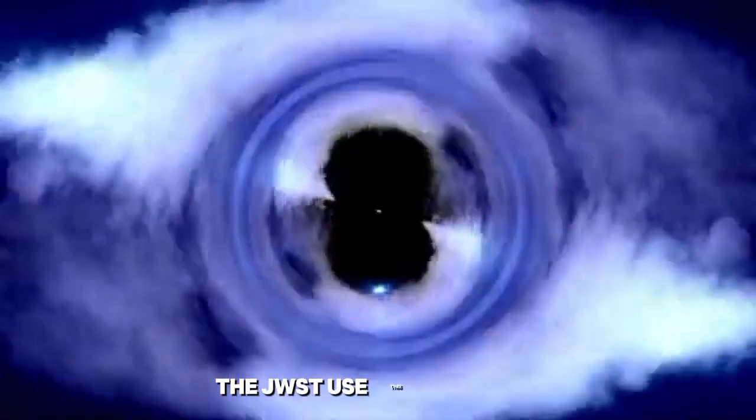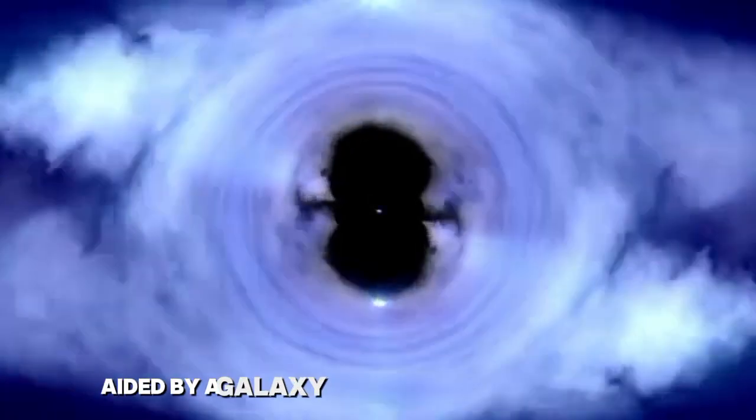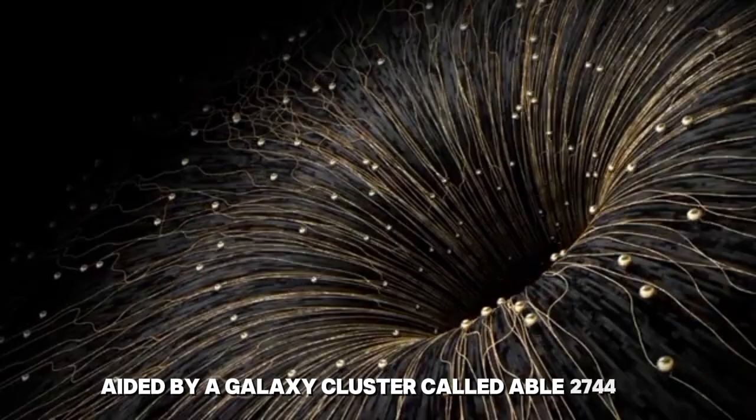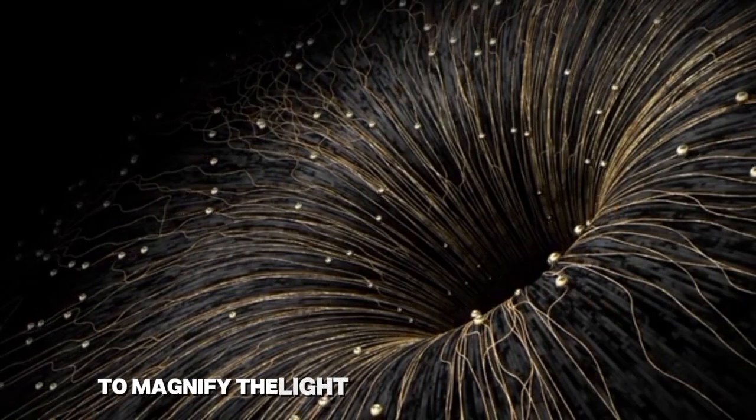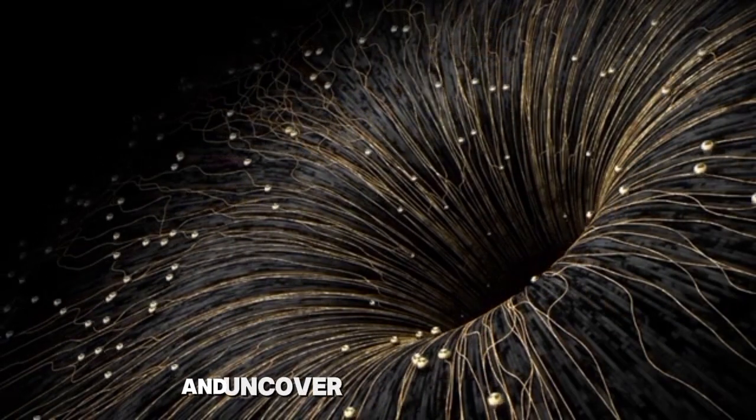The JWST used this effect, aided by a galaxy cluster called Abell 2744, to magnify the light from distant galaxies and uncover the ruby quasar.